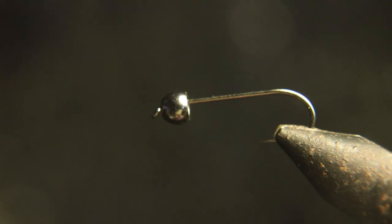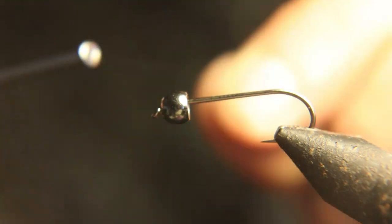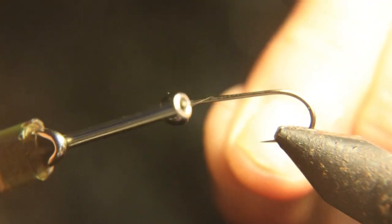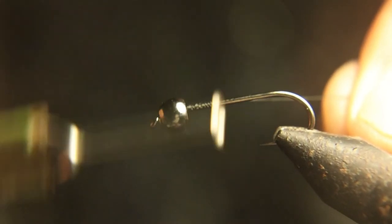We're going to use a black thread. I have 70 denier here, but you don't need to use 70. You could use 100 denier or a lot thicker thread, but I like 70 denier because I can use a lot more thread wraps without creating bulk.